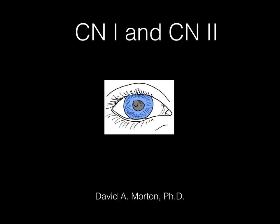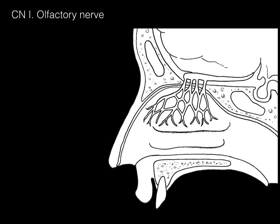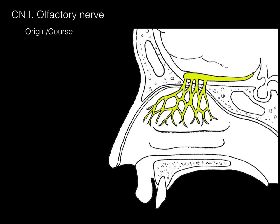Let's begin by talking about cranial nerve 1 and cranial nerve number 2. Cranial nerve 1 is known as the olfactory nerve. Olfactory means olfaction, or smell. This picture demonstrates a mid-sagittal section through the nasal cavity from a medial view.